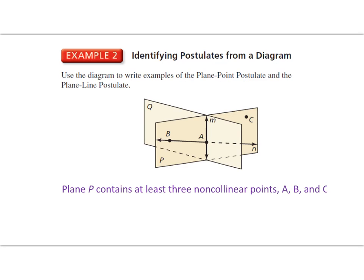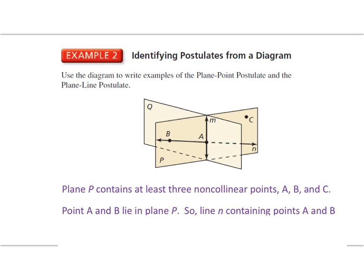A, B, and C. I also see point A and B lie in plane P, so line N containing points A and B also lies in plane P.